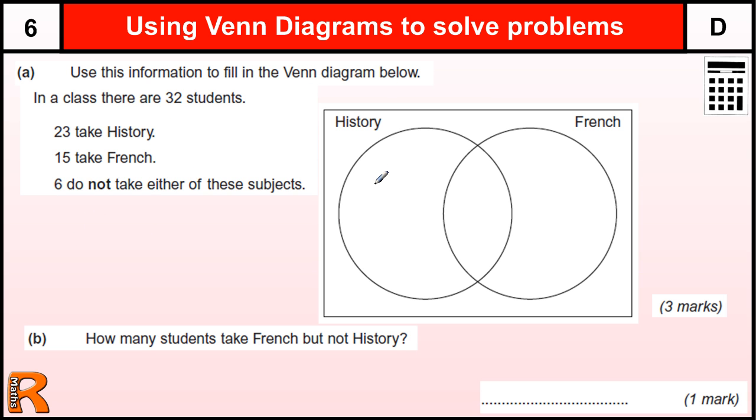Now, we're asked to fill in a Venn diagram where we have this information. In a class there are 32 students, 23 take History, 15 French, and 6 do not take either of these two subjects.